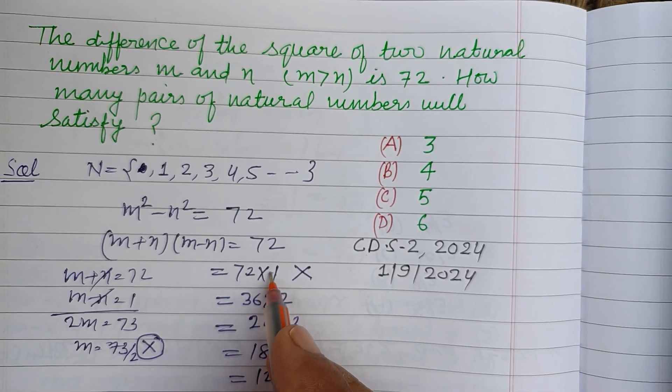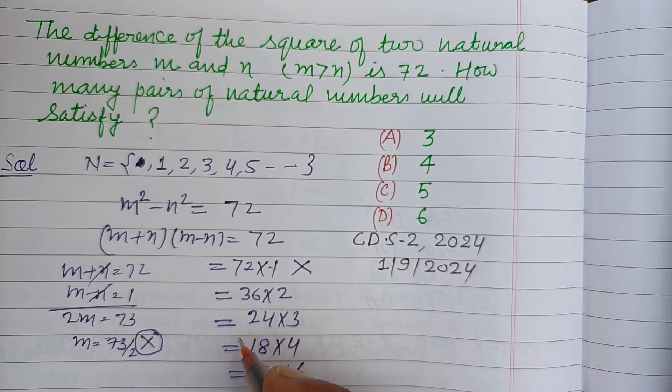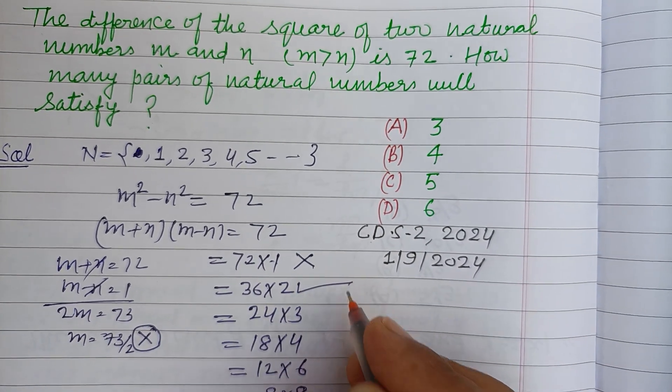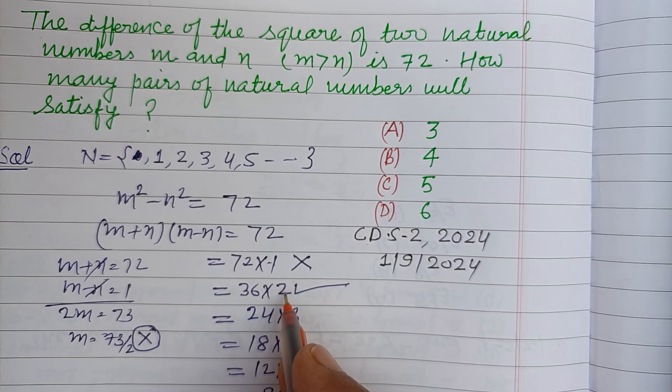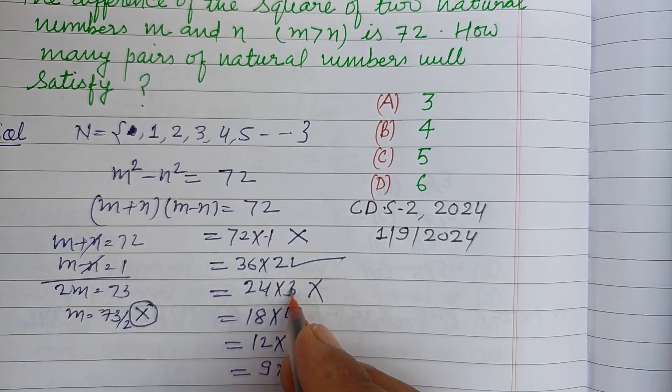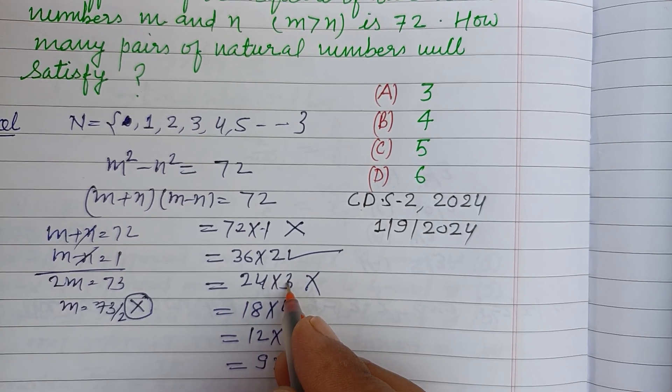So this is possible: 36 plus 2 equals 38, which is divisible by 2, so we get 19. And this is not possible because we got 27, which is not divisible by 2.